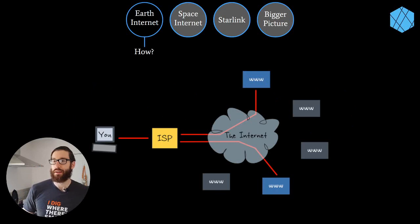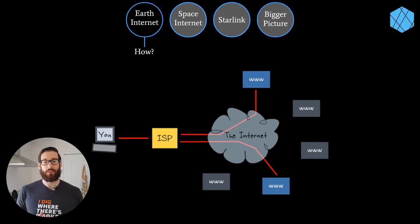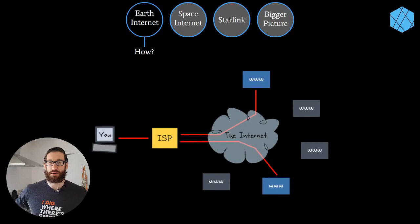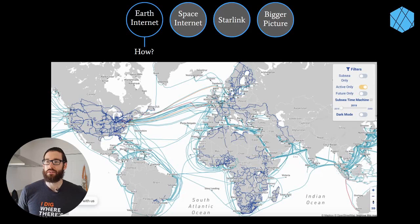How does the internet on earth work? It's very simple. The internet consists of a bunch of metal boxes and cables. Inside these cables are pulses of light or electrons, and different magnitudes of these pulses carry information. Here's a super simple diagram: you, your ISP, and the internet. You send information to an ISP that runs the infrastructure, they send it to servers with the information you want, and send it back.